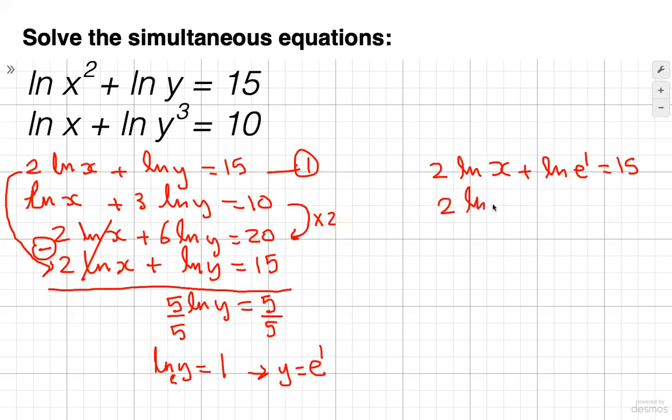Now, 2 ln x plus ln e to the 1 is just 1, basically, because ln e is 1. And if you bring that 1 in the front there, e to the 1 is just e. So ln e equals 1, and then 15.